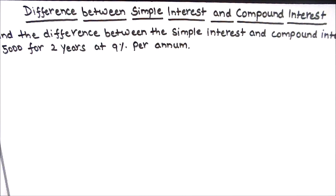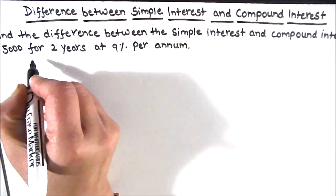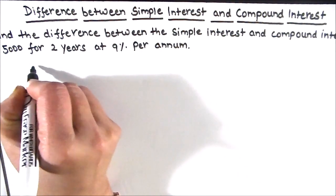In this question we will first find the compound interest and then we will find the simple interest. Both interests we are going to find using the formula, and then after finding the compound interest and simple interest we are going to find the difference between them. So let's start by finding the compound interest.